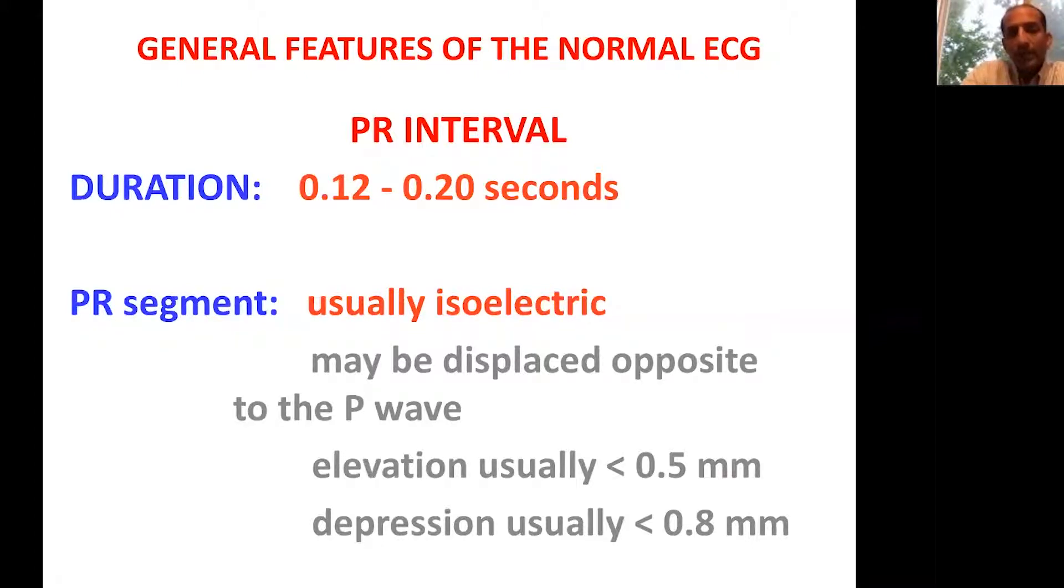The PR segment is the segment from the P wave to the R wave. It's usually flat. But if it is more than 0.5 millimeters, then we call it PR elevation. If it is less than 0.8 millimeters, then we call it PR depression. This has implications in terms of looking at damage to the atria. PR elevation would be seen in conditions where you have small infarction of the atrium. PR depression is usually seen in patients who have conditions like pericarditis.